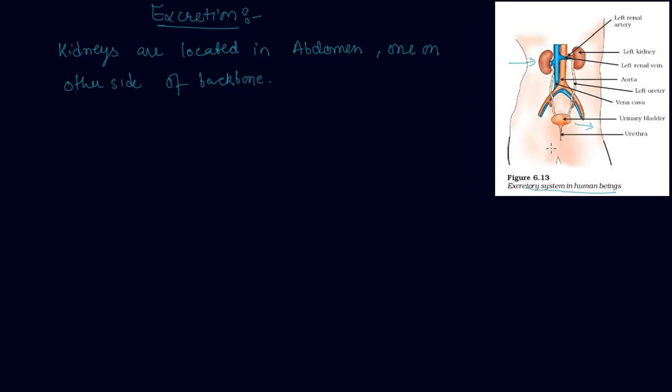Urine produced in the kidneys passes through the ureters into the urinary bladder.